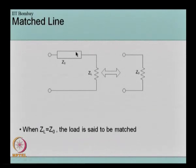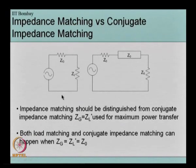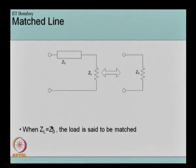A matched line is a special case where a load Z_L is connected to a transmission line with characteristic impedance Z0, and if Z_L equals Z0 the line is said to be matched. This will also mean that the reflection coefficient at the load end is 0, that is there is no reflection at the load end.